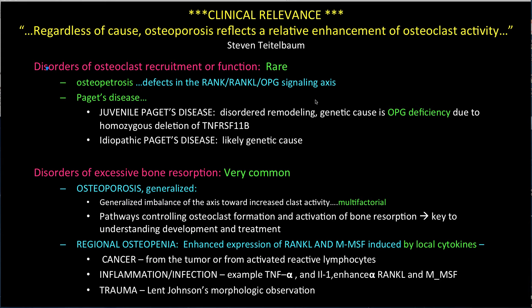Far more common are disorders of excessive osteoclast activity manifesting as osteoporosis. Osteogenesis imperfecta is the only anomaly where it is the absence of effective osteoblasts that produces osteopenia. In most, if not all other forms of generalized osteoporosis, the balance swings to excessive osteoclastic function as the culprit, leading to the reduced bone mass. Cancer, inflammation, infection, and trauma are all associated with regional osteopenia, as a result of enhanced expression of RANKL and M-CSF, induced by local cytokines such as tumor necrosis factor alpha and IL-6 in rheumatoid arthritis.